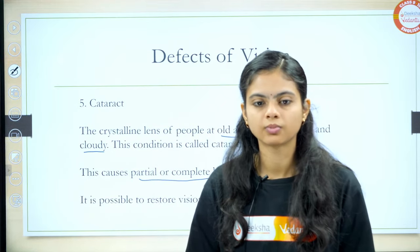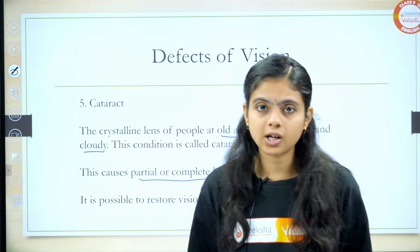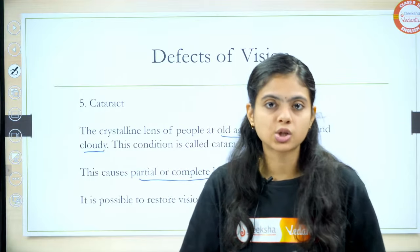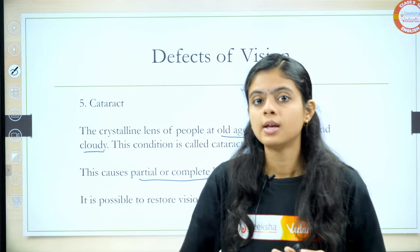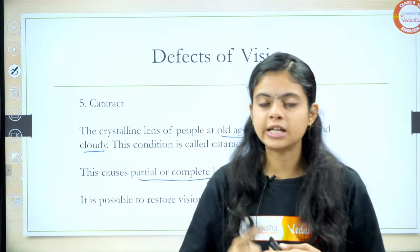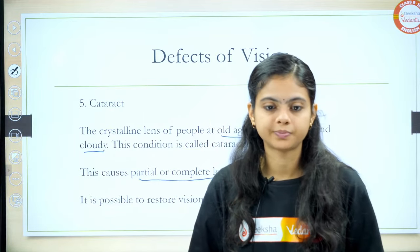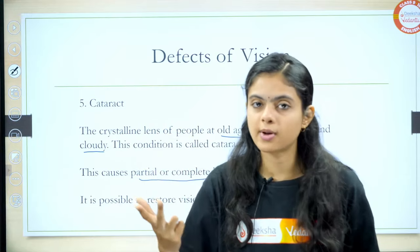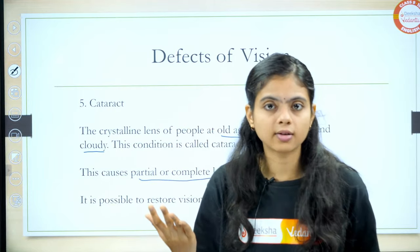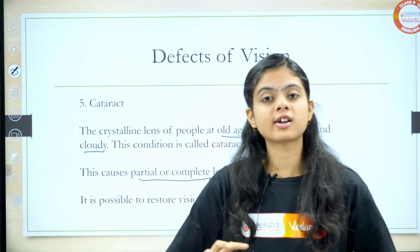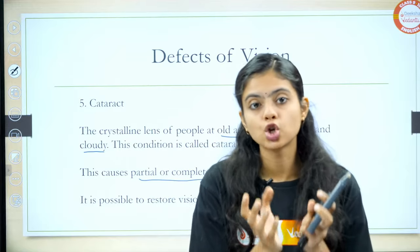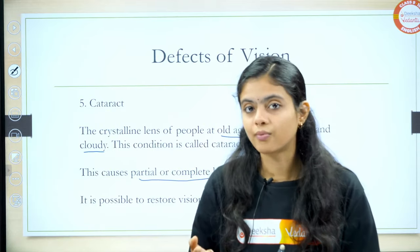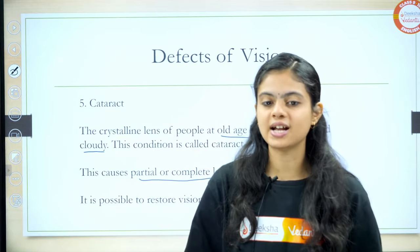So we have discussed about the eye, its parts, its function, then power of accommodation, far point, near point, and defects of vision — myopia, hypermetrophia, presbyopia, astigmatism, and cataract. We are completed with the first part — that is human eye. In the second part we'll be discussing about what? Colorful world. Let's start now with the colorful world.